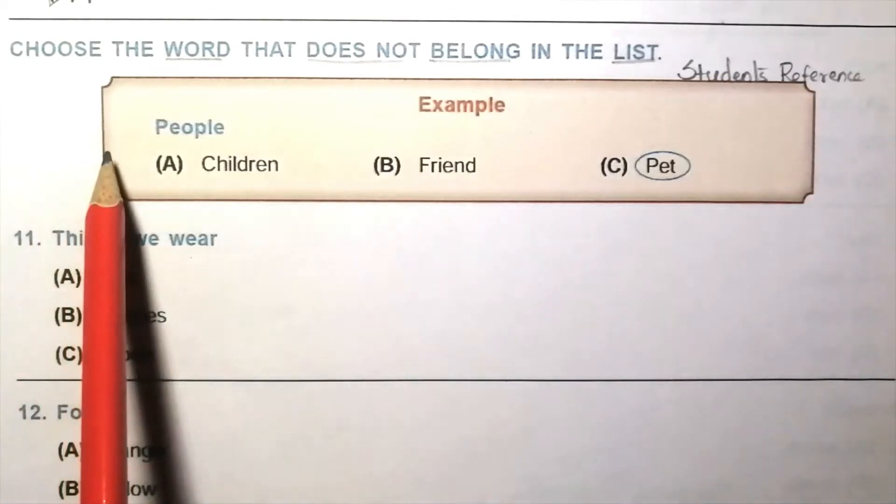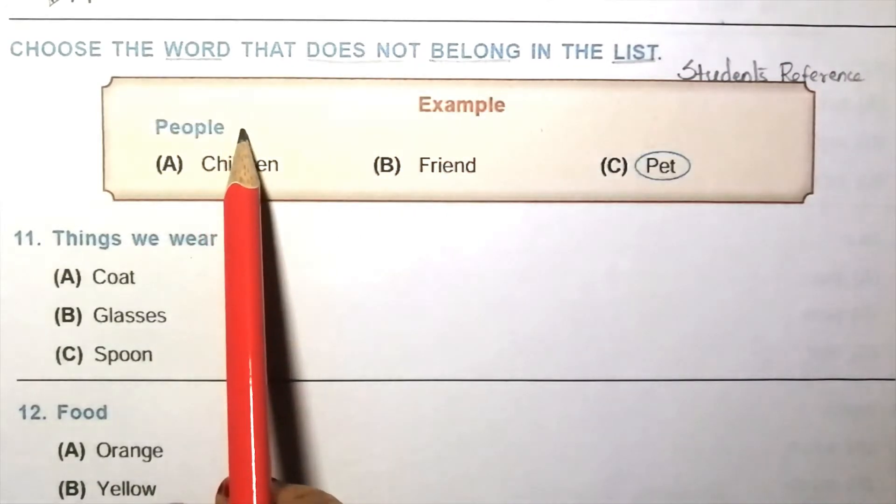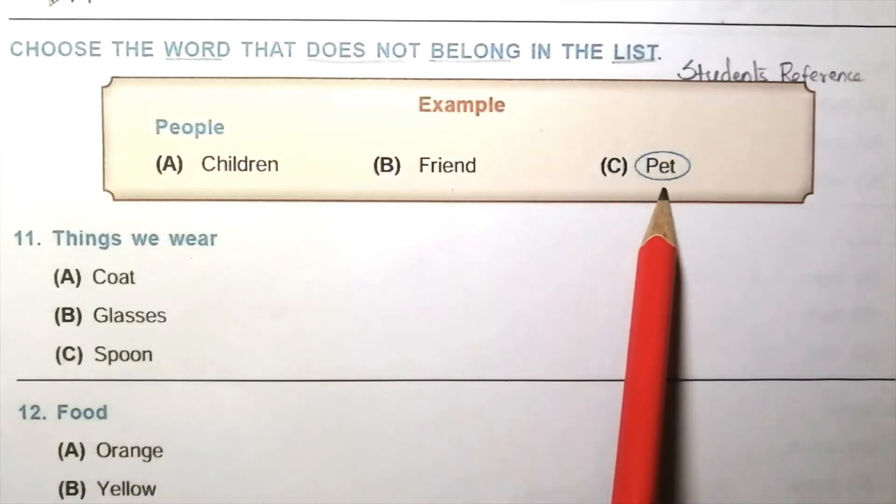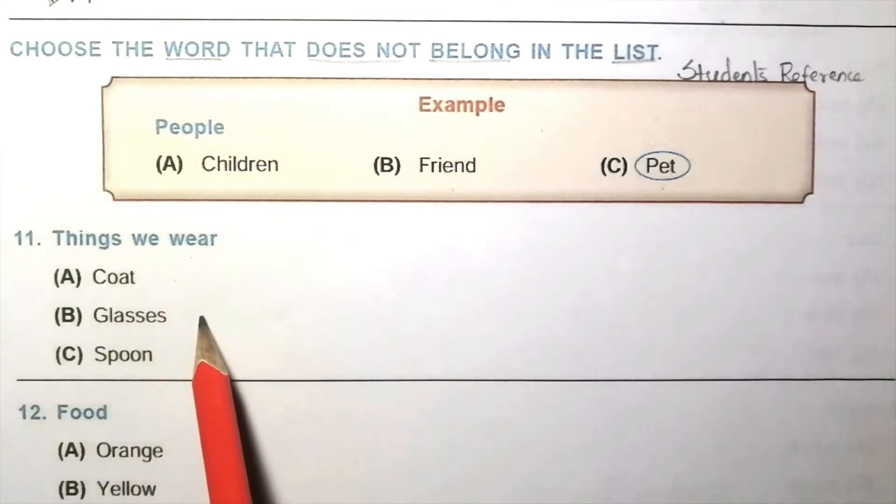Choose the word that does not belong in the list. Example: People. Children, friend, pet. The answer is pet. Question 11: Things we wear. Coat, glasses, spoon. We can't wear spoon. So the answer is C, spoon.